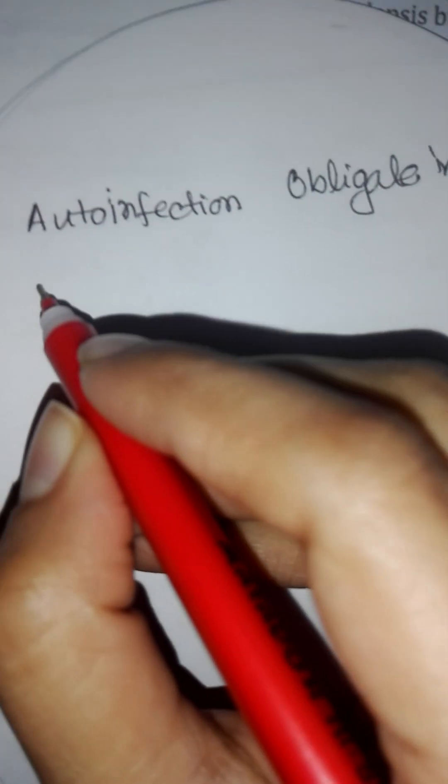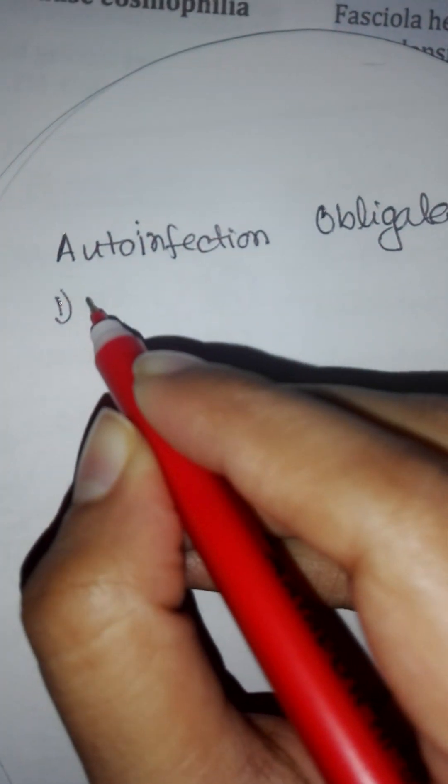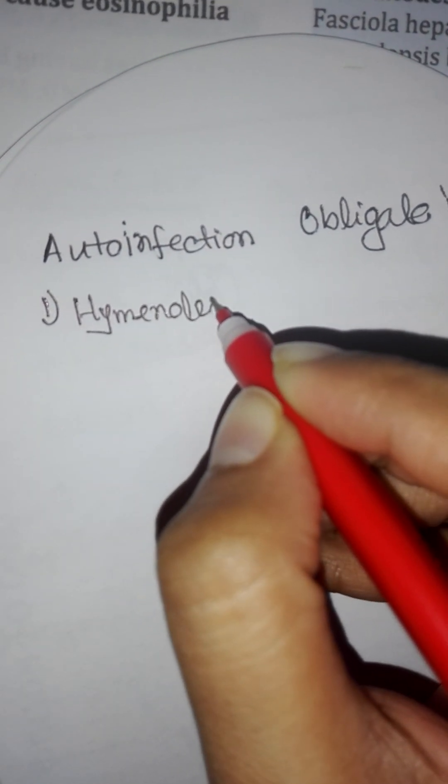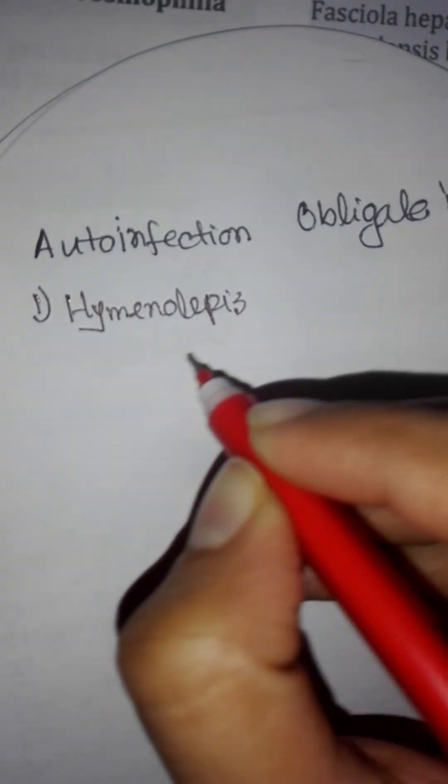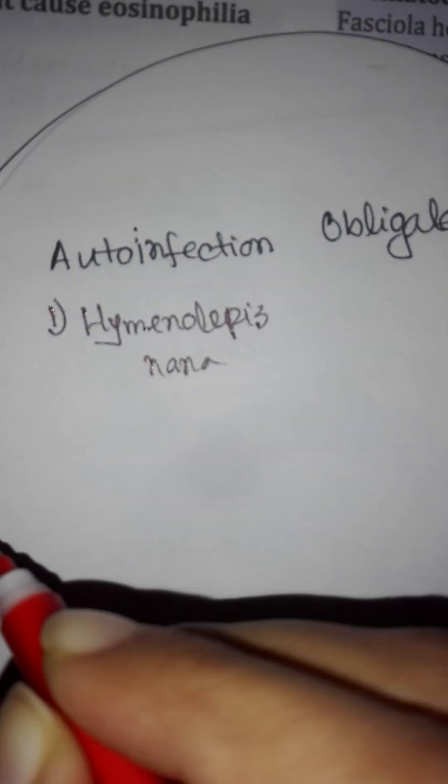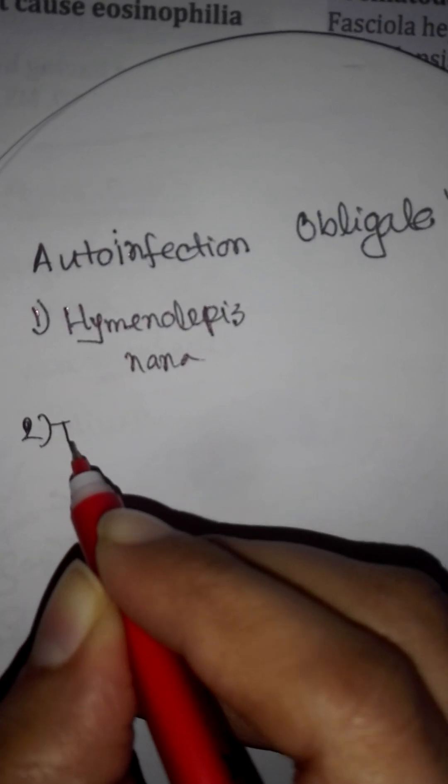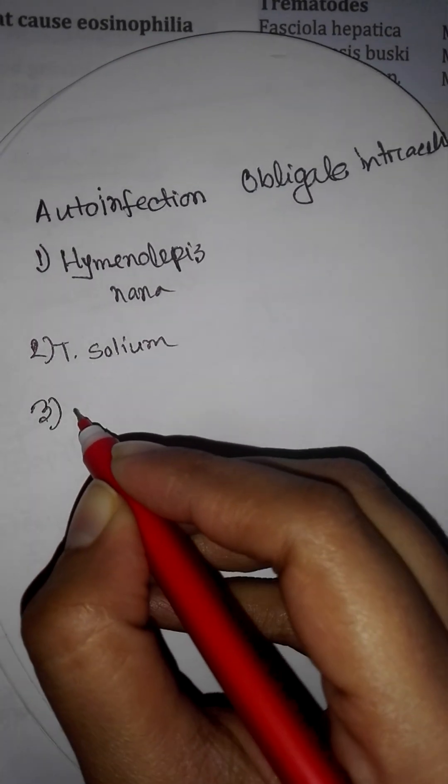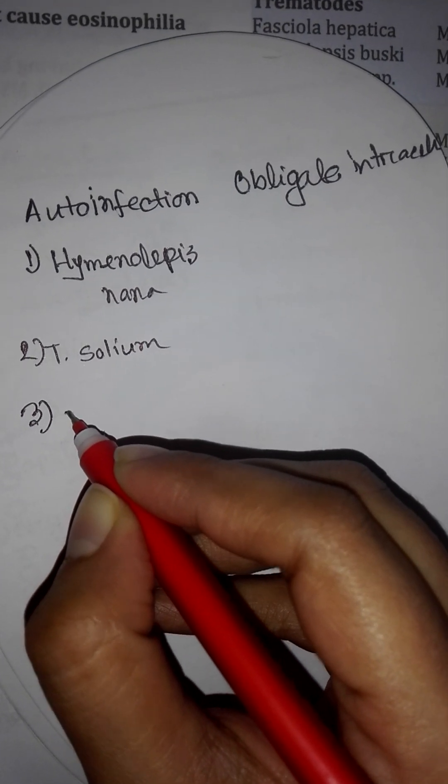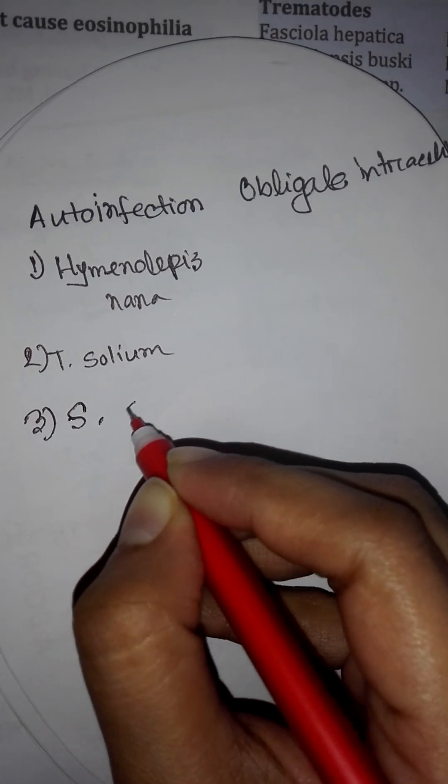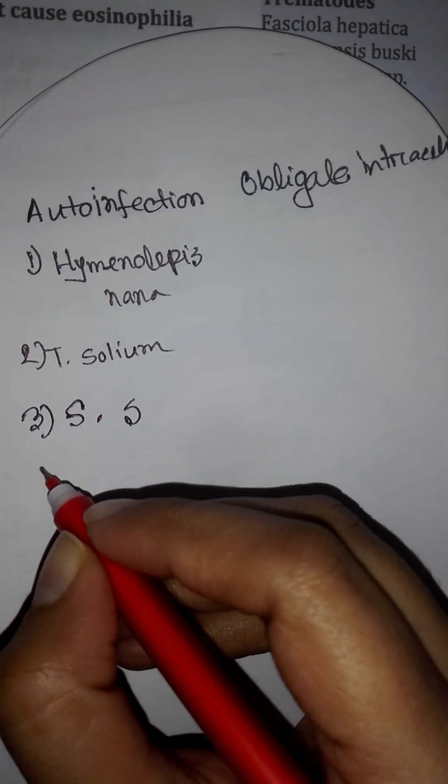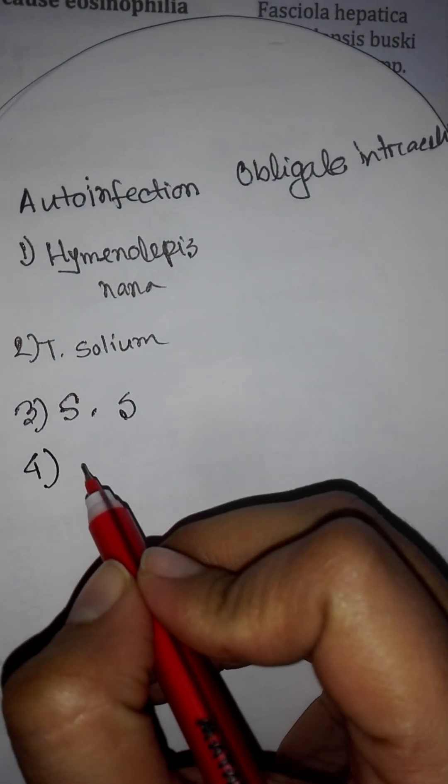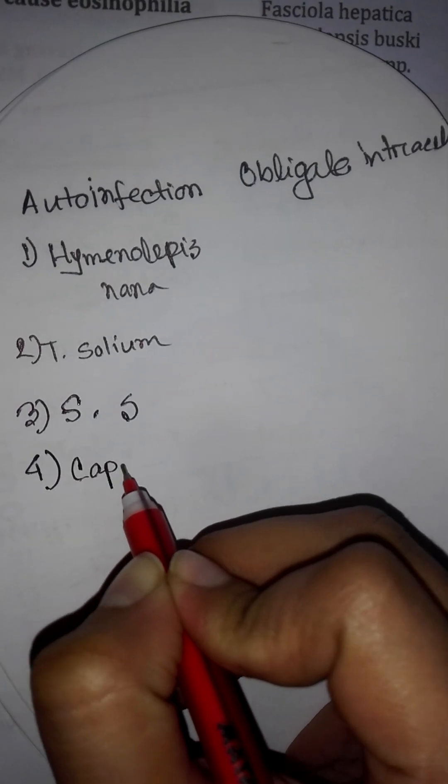So auto infection: one is Hymenolepis nana, second is Tenia solium, third is Strongyloides stercoralis, fourth is Capillaris philippinensis.